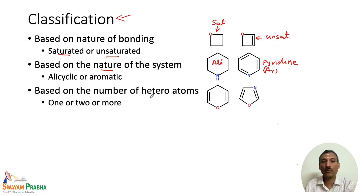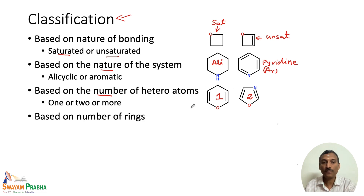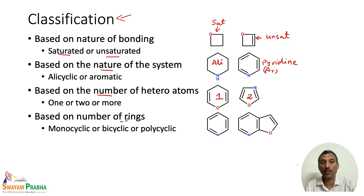We can also classify heterocyclic compounds according to the number of heteroatoms present — one heteroatom or two or more heteroatoms in the ring. Additionally, we can classify them by the number of rings: a compound with only one ring is monocyclic, with two rings is bicyclic, or polycyclic.